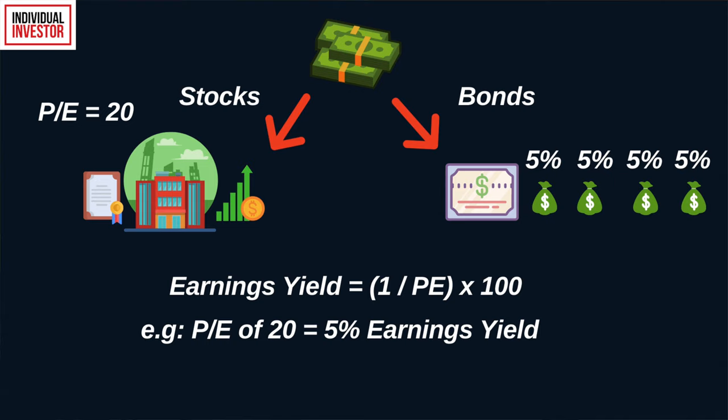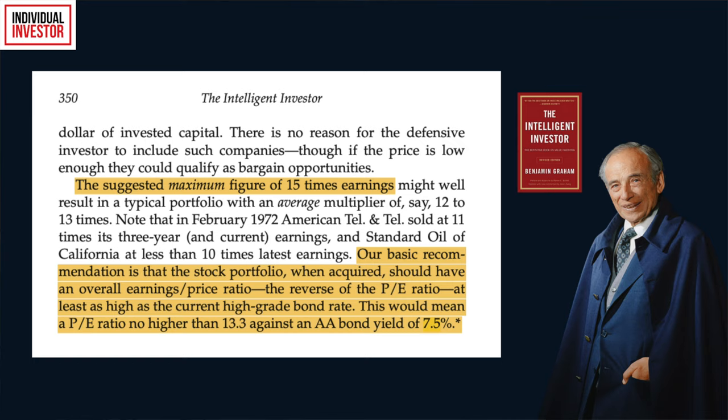So if we have a PE ratio of 20, this would be in theory comparable to a bond yield of 5%. This simple logic is what Benjamin Graham follows when he explains the optimal PE ratio for defensive investors. He says: 'Our basic recommendation is that the stock portfolio, when acquired, should have an overall earnings price ratio — the reverse of the PE ratio — at least as high as the current high grade bond rate.' This would mean a PE ratio no higher than 13.3 against a AA bond yield of 7.5%.